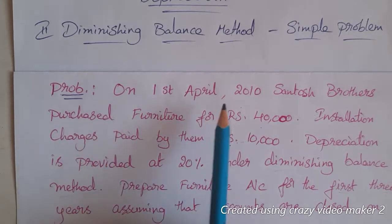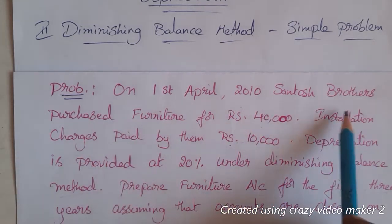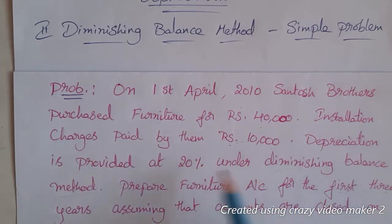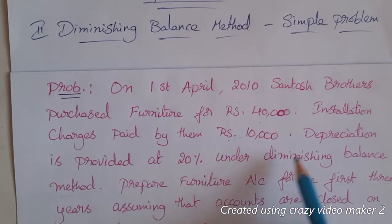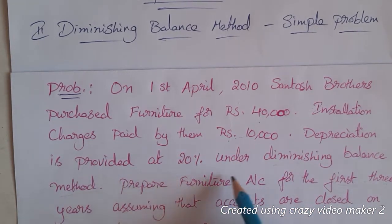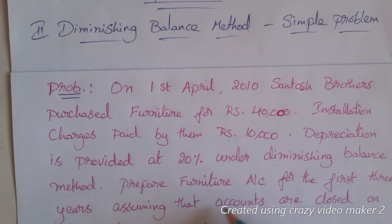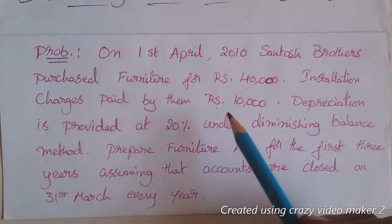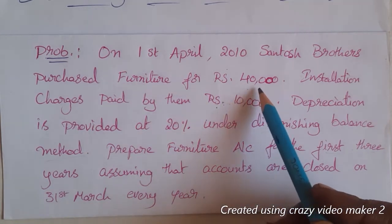Problem 1: On 1st April 2010, Santosh Brothers purchased furniture for ₹40,000. Installation charges paid by them were ₹10,000. Depreciation is provided at 20% under the diminishing balance method. Prepare the furniture account for the first three years, assuming accounts are closed on 31st March every year.